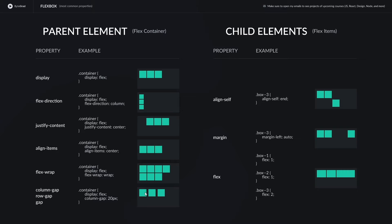If we want space between flex items, we need to use one of the gap properties. To add space between columns, we use `column-gap`. If we have multiple rows and want space between them, we use `row-gap`. If we want space between both rows and columns, we can simply use the shorthand `gap` property. That covers the flex container properties.